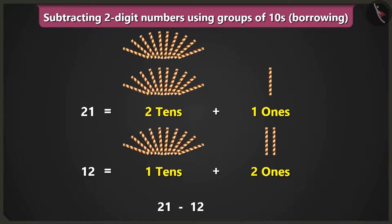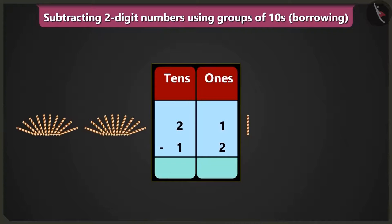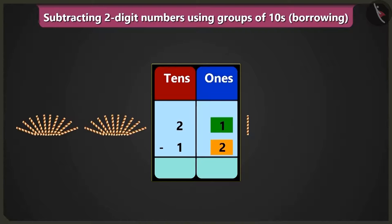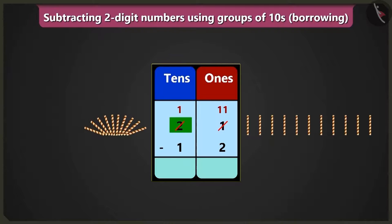How many would twenty-one minus twelve be? We will write these numbers in the boxes of ones and tens and then do the subtraction of the numbers in the box of ones. But we cannot subtract two from one in the box of ones. So we will borrow one ten from two tens in the box of tens. Now we will write eleven ones instead of one in the box of ones, and we will write one ten instead of two tens in the box of tens.